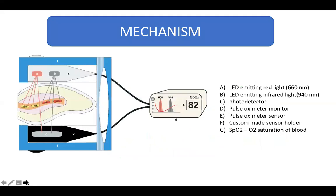The pulse oximeter contains two LEDs: one emits red light at 660 nanometers, and the other emits infrared light at 940 nanometers. Both lights pass through the tooth and are received by a sensor placed on the opposite side of the tooth. Infrared and red light are absorbed in different quantities by oxygenated and deoxygenated blood, and this information received by the sensor is transmitted to a microprocessor, which converts the measurements into oxygen saturation of blood.